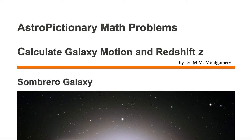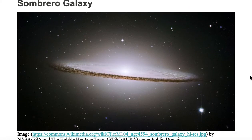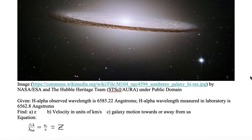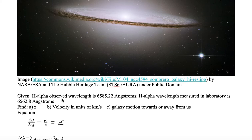We would like to calculate galaxy motion and the redshift Z value for the Sombrero Galaxy. We are given an H-alpha line observed at a wavelength of 6585.22 angstroms, and the same line measured in the laboratory is at 6562.8 angstroms. From these two wavelengths, we want to determine: A, the redshift parameter Z; B, the velocity of the galaxy in units of kilometers per second; and C, the galaxy's motion towards or away from us.